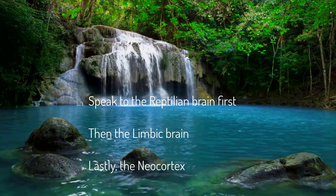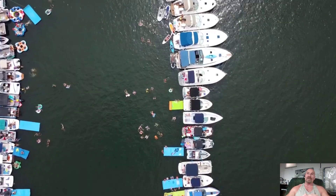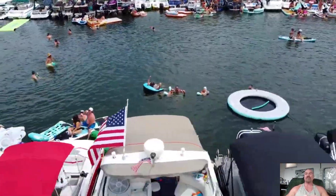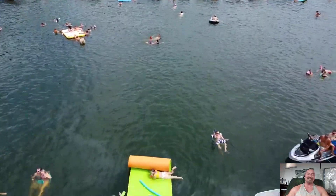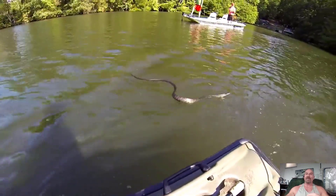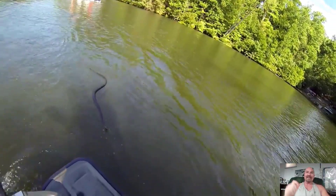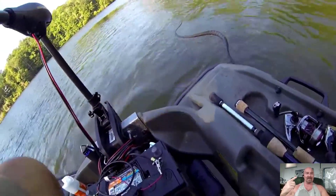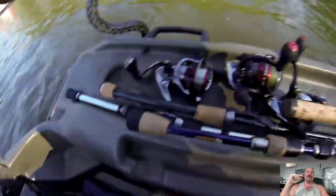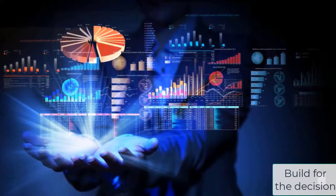This brain can make survival decisions before you or the other brains can even begin to process data. I know this firsthand — we were out at the lake and I was floating on a raft talking with friends and family. I felt something brush my leg, and before I could look and see, I had reached down, grabbed, and thrown a four-foot water snake at least 30 feet across the water. I literally grabbed and threw a snake before my neocortex could even register that there was a snake on my lap. That's the reptilian brain, and that's what we try to speak to in our marketing.